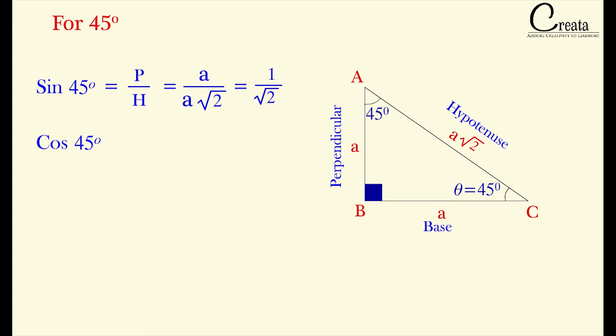Cos 45 will be base by hypotenuse, that will be A by A root 2, that is 1 by root 2. And tan 45 degree will be perpendicular over base, that will be A by A, that is 1.